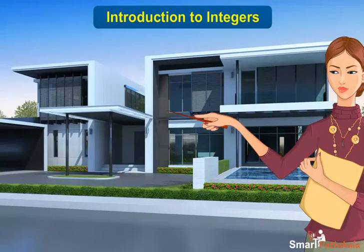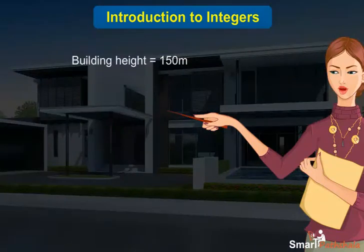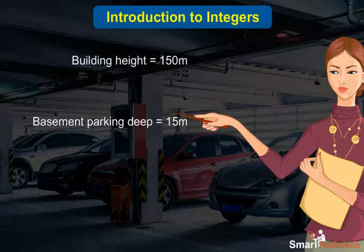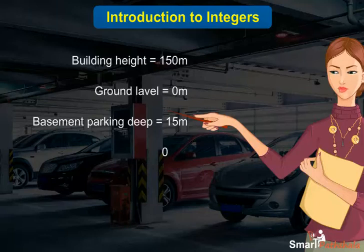Raj saw a tall building. It was 150 meters in height when measured from the ground floor. The building had basement parking which was 15 meters deep. We can represent this data with integers. If we represent ground level as 0, then the height of the building will be plus 150 meters and the depth will be minus 15 meters.